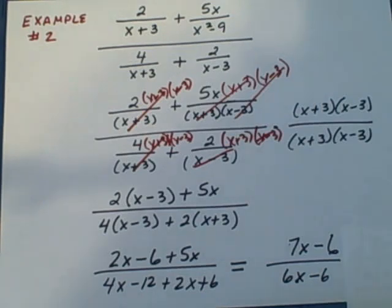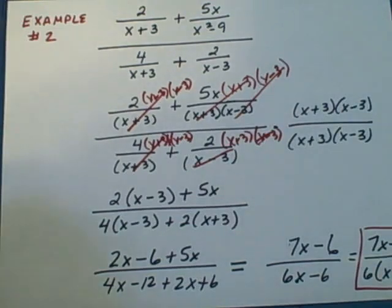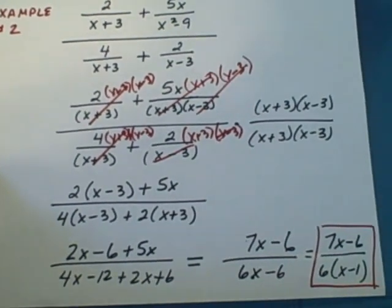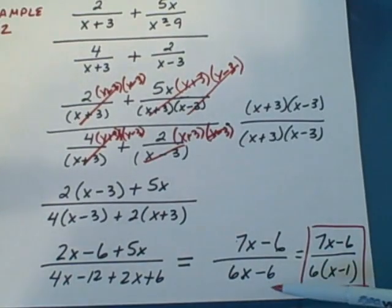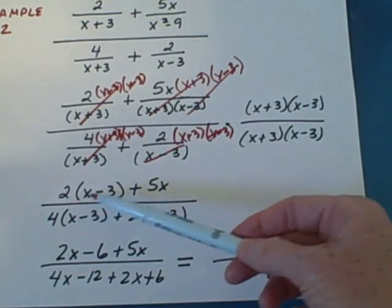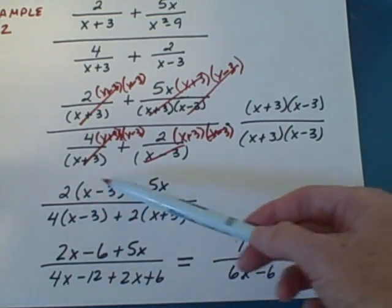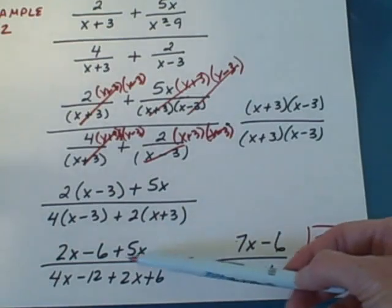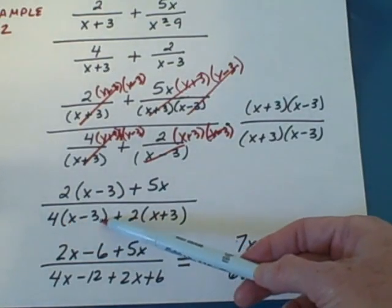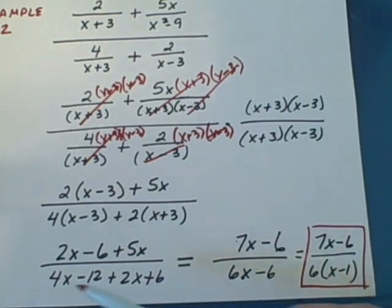We're going to get 7x minus 6 over 6x minus 6. And then we're going to factor out a 6 in the denominator leaving 7x minus 6 divided by the quantity 6 times x minus 1. Let's repeat that a little bit. Notice we're going to multiply 2 times x, 2x. 2 times negative 3 is negative 6 plus the 5x. We multiply this in, distribute the 4 in, distribute the 2 in, and then 2x and 5x gives me 7x minus the 6.